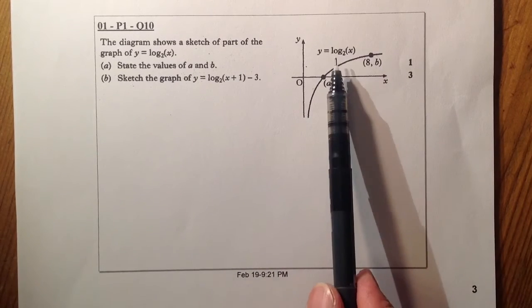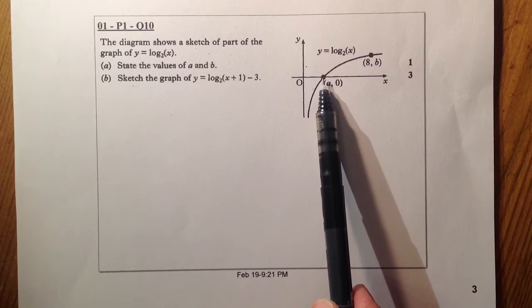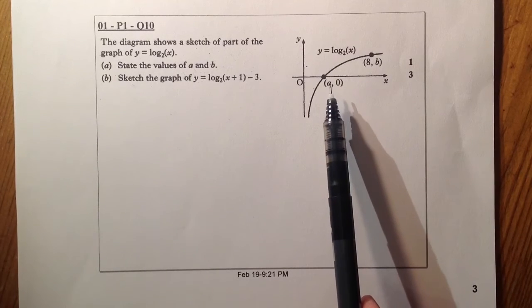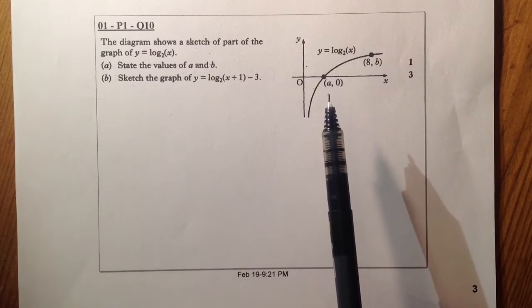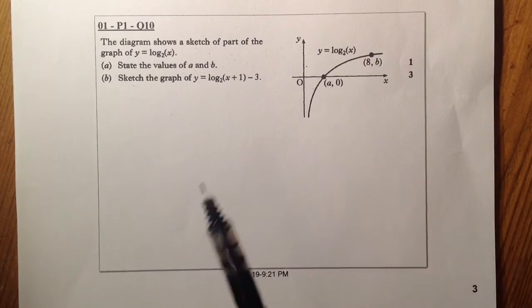Now, I know that this type of graph passes through the point 1, 0, so I would expect that a is going to be the point 1, 0. If I didn't know that, let's work it out.